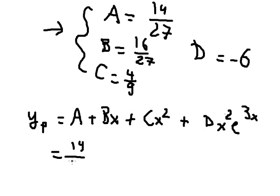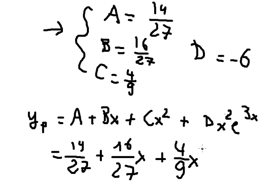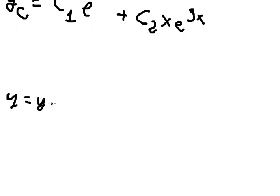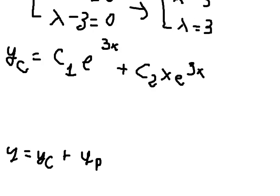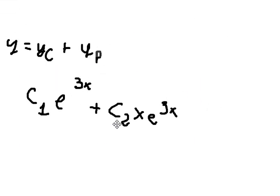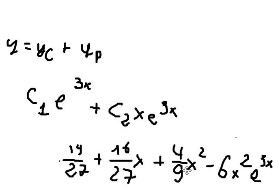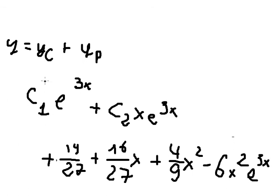So yp = 14/27 + (16/27)x + (4/9)x² − 6x²·e^(3x). After finding both yc and yp, the final general solution is y = yc + yp — combining the complementary solution and the particular solution together. That is the final answer. Thank you for watching.